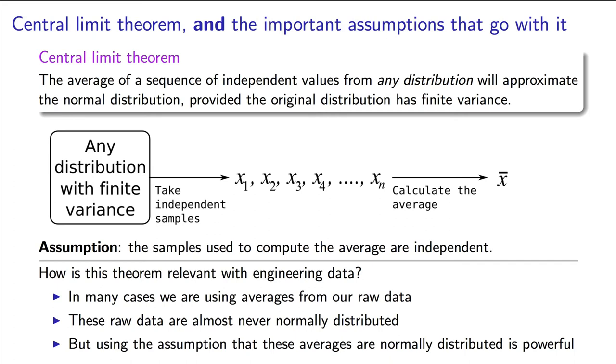There are two restrictions, though. The first one is satisfied for all practical systems, and that's the requirement the data comes from a distribution of finite variance. The one that is more concerning is the requirement that the samples are independent.